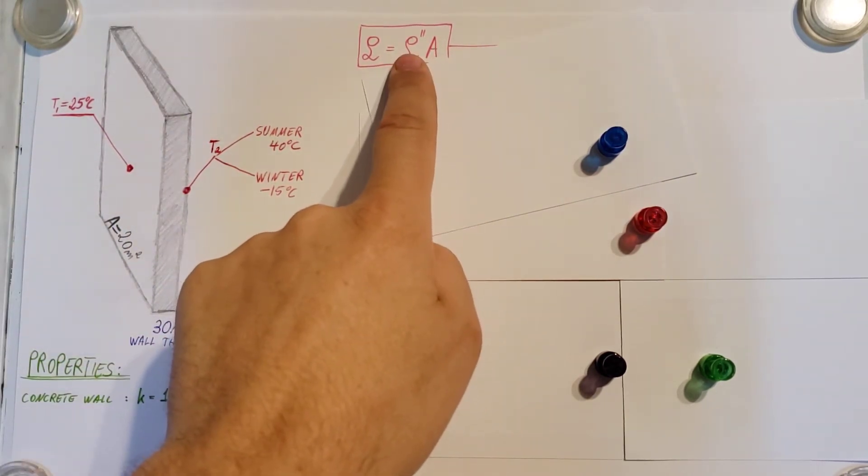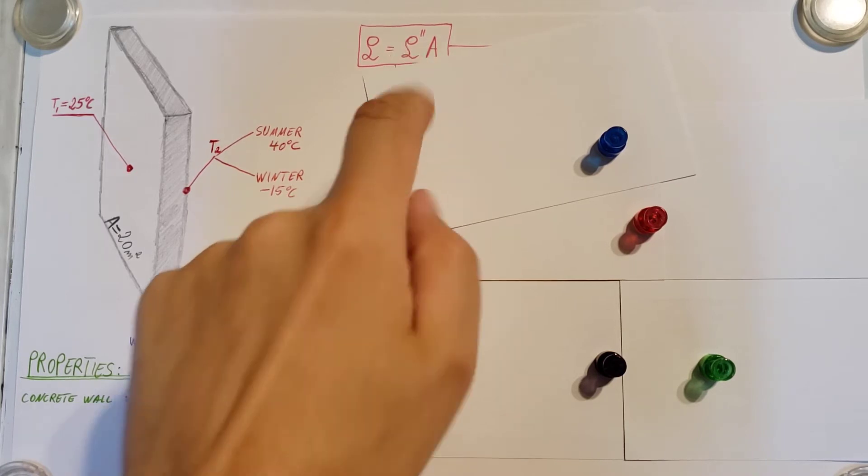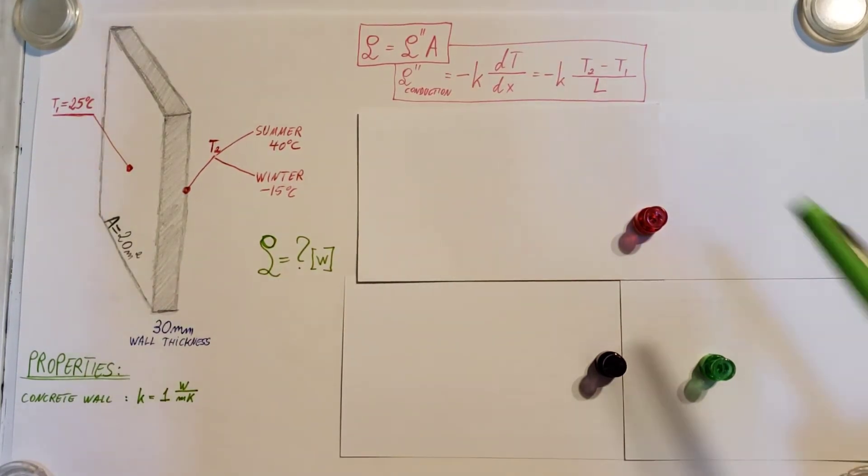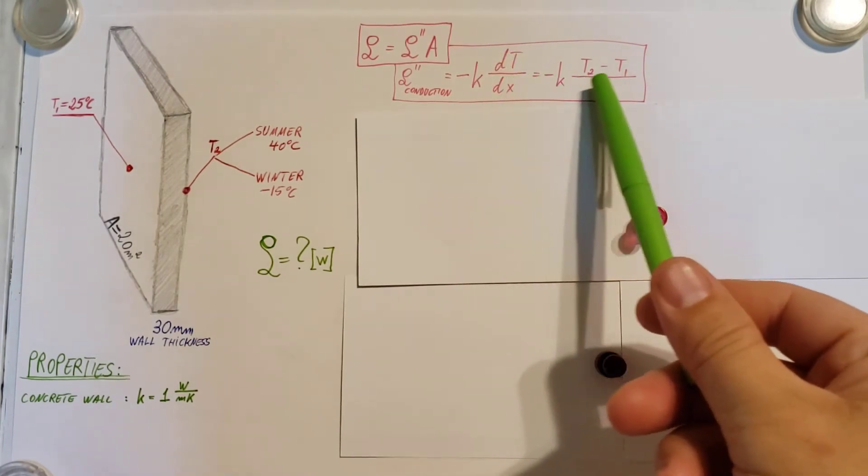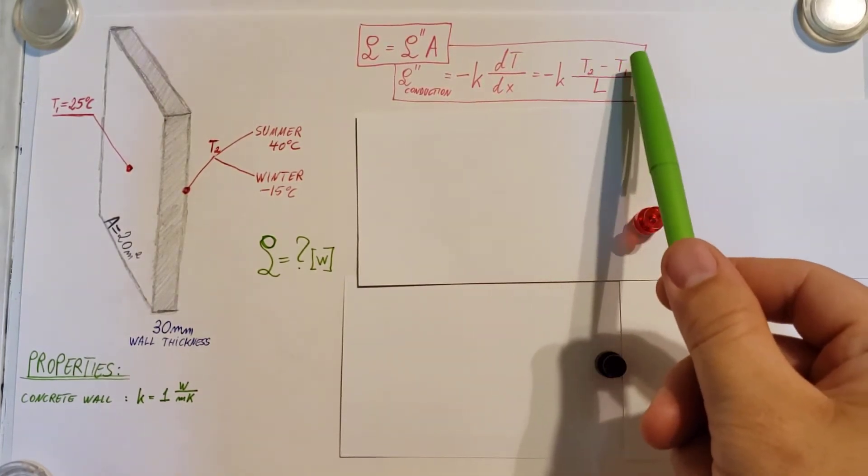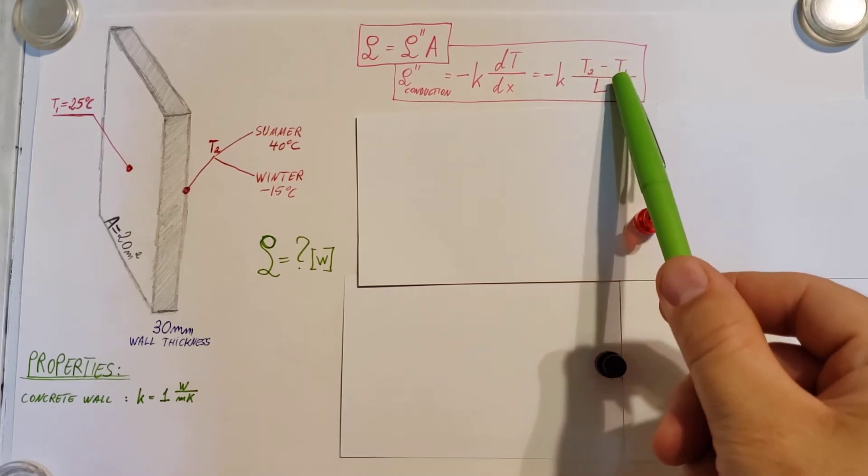So for this flux, we're going to write up our flux formula for conduction. Here it is. This is the formula right here. And if we expand it a little bit, we can see the temperatures right here. T2 minus T1.